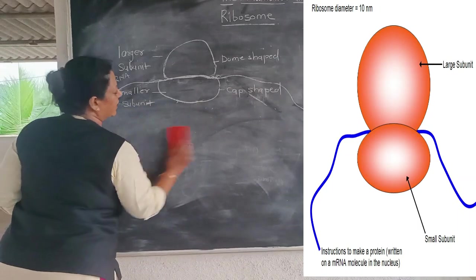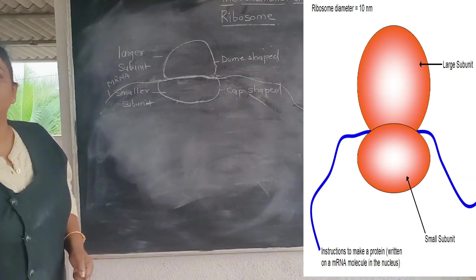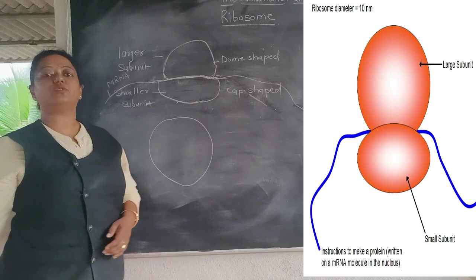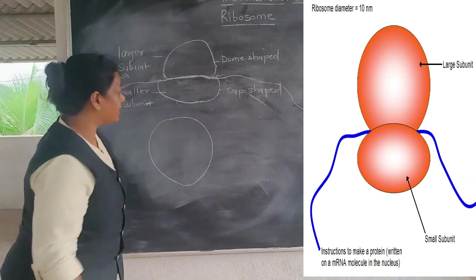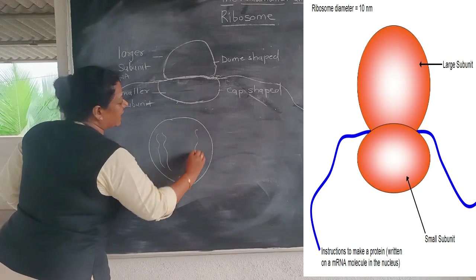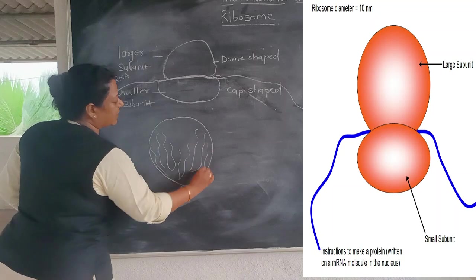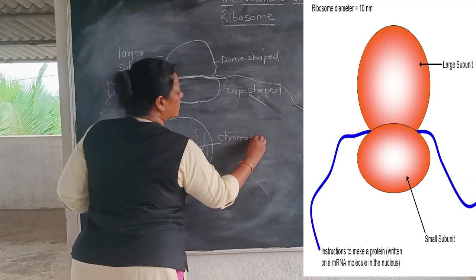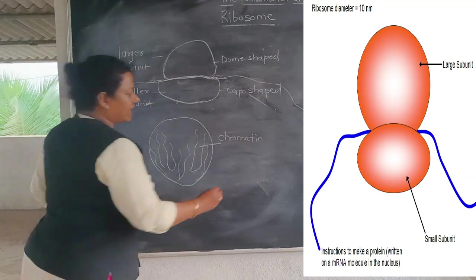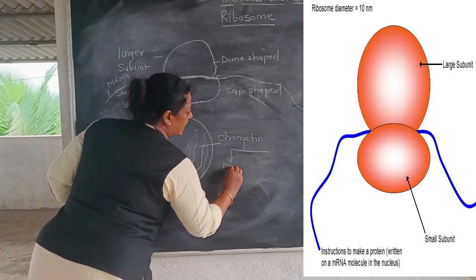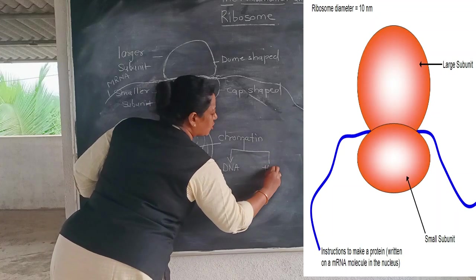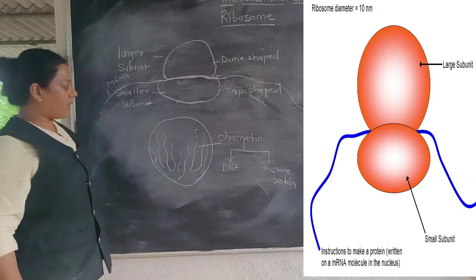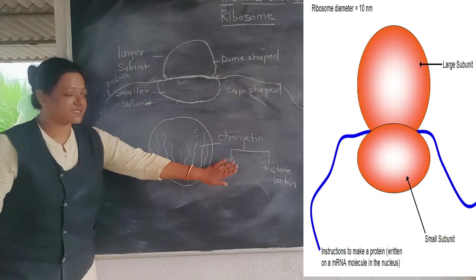Now we will look at the structure of the nucleus. Inside the nucleus, a thread-like material is present called chromatin material. This chromatin material is made up of DNA and histone protein — that is, deoxyribonucleic acid and histone protein.